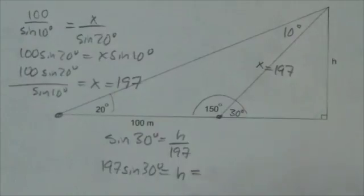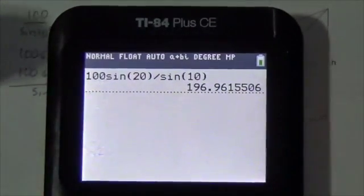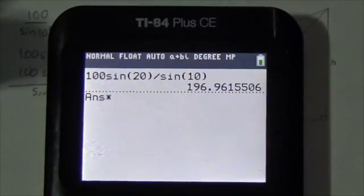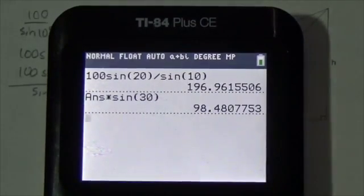And that's going to equal - now I'm going to go to my calculator here. I already have that value in there. I'm not going to get rid of it. I'm going to multiply this by the sine of 30 degrees. And I get 98.48, so 98.5.